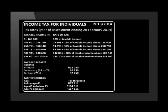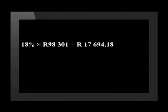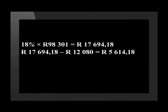Now to calculate Michael's tax, we use the value of his taxable income of 98,301 rand, which we calculated earlier. Looking on the tax tables, we find in which salary band this income falls. Michael's taxable income of 98,301 rand falls in the salary band of 0 to 165,600 rand. Reading across, we find 18% of taxable income is the rate of tax. 18% of 98,301 rand equals 17,694.18 rand. We now have to deduct the rebate from this amount: 17,694.18 rand minus the primary rebate of 12,080 rand, which equals 5,614.18 rand.